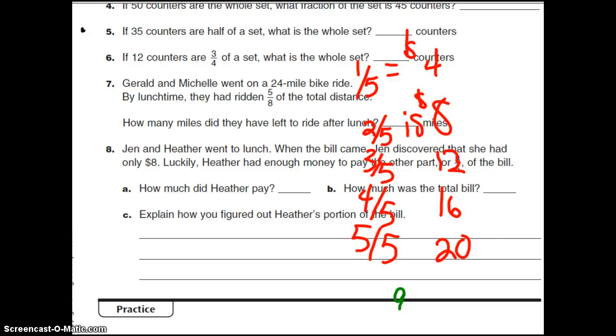So our questions were, how much did Heather pay? Well, she paid 3/5. So she paid $12. Don't forget your dollar sign here. And then how much was the total bill? 5/5 would be the whole thing. So the whole thing was $20.